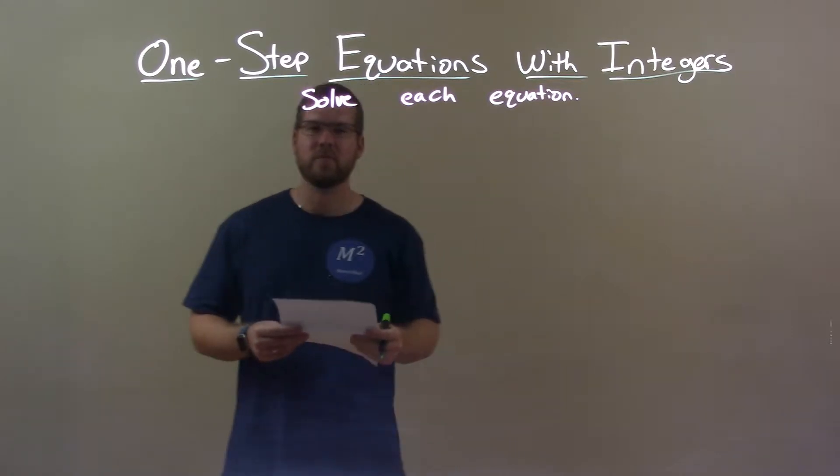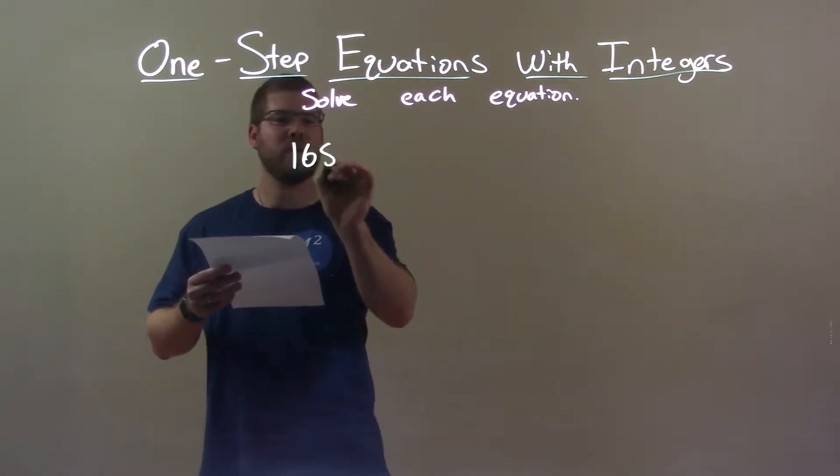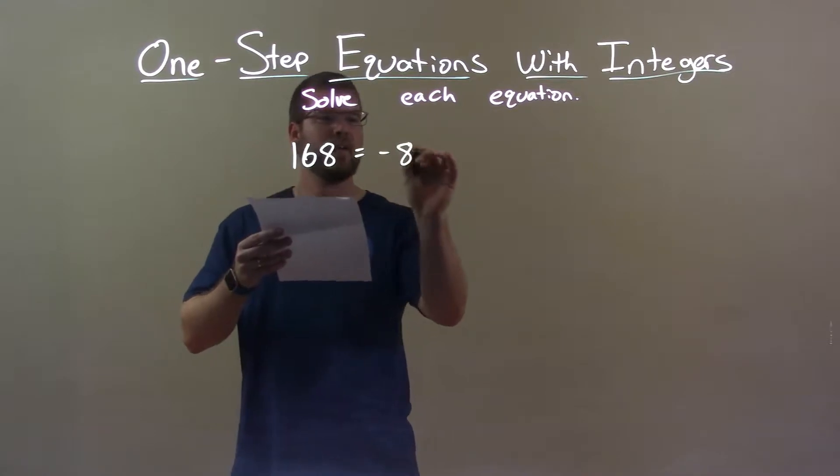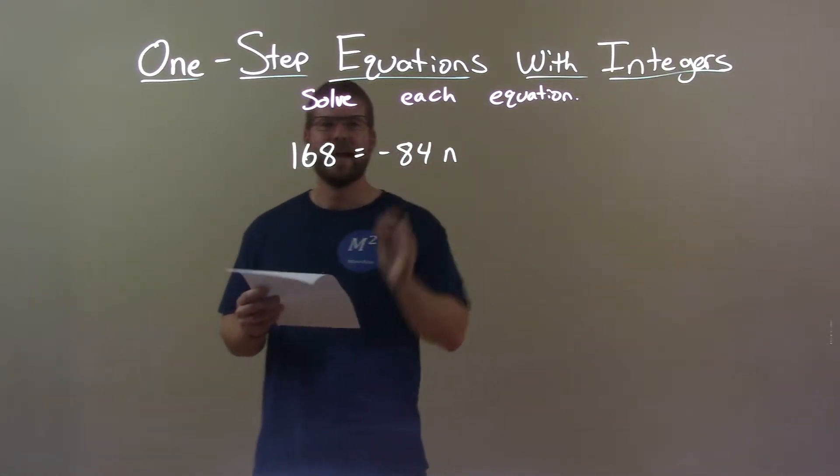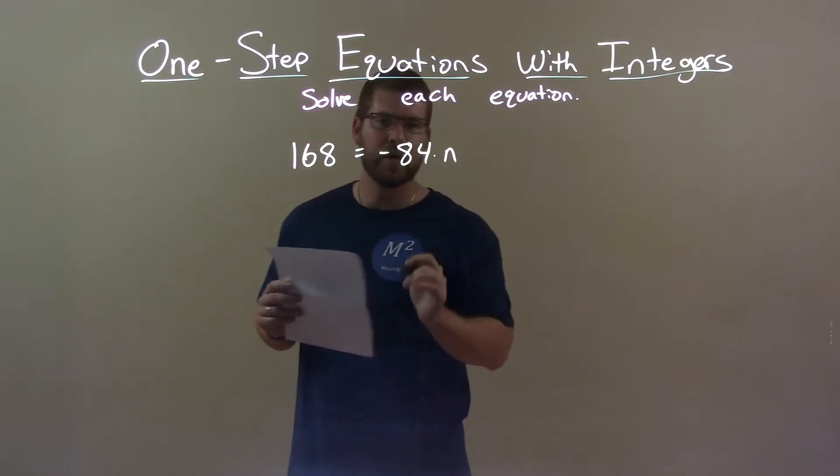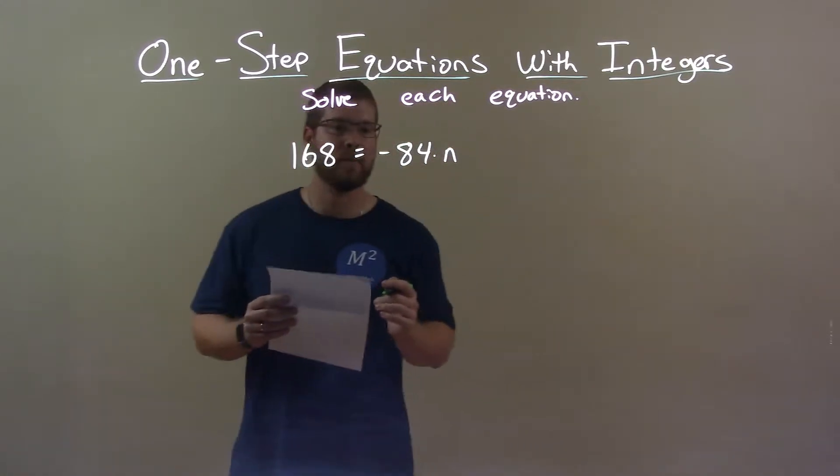If I was given this equation, 168 equals negative 84n, alright? Well, I want to get n by itself. Now there's a multiplication between negative 84 and n right there, okay?